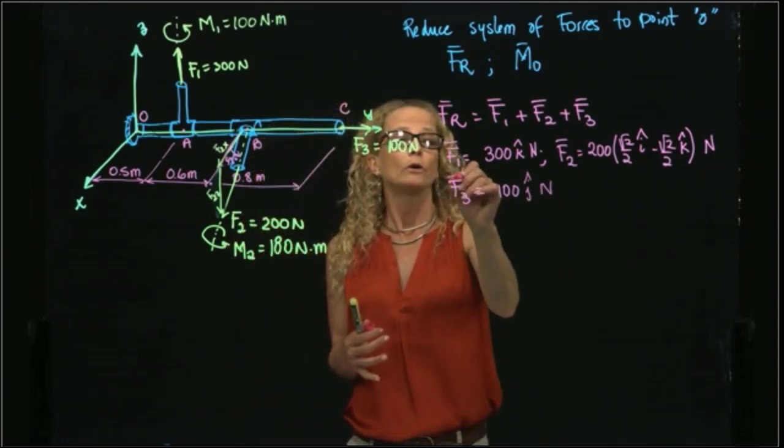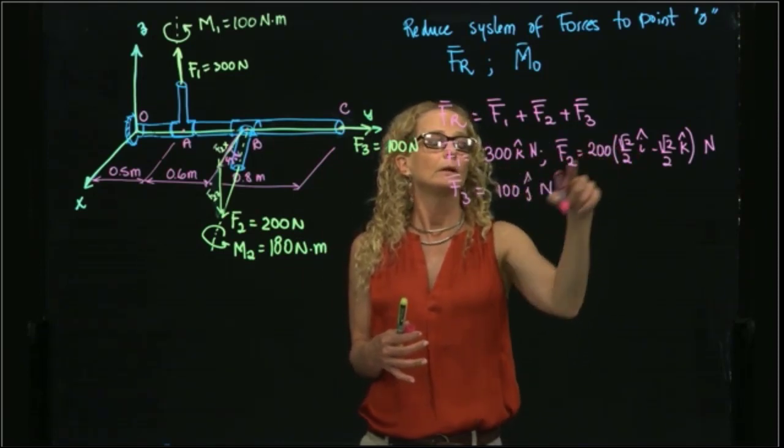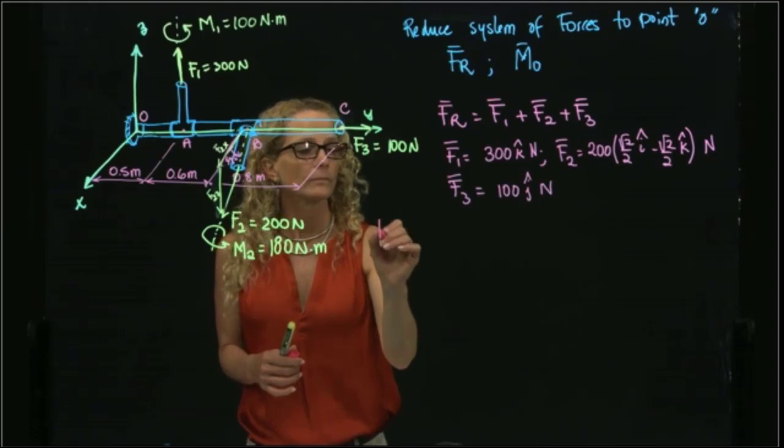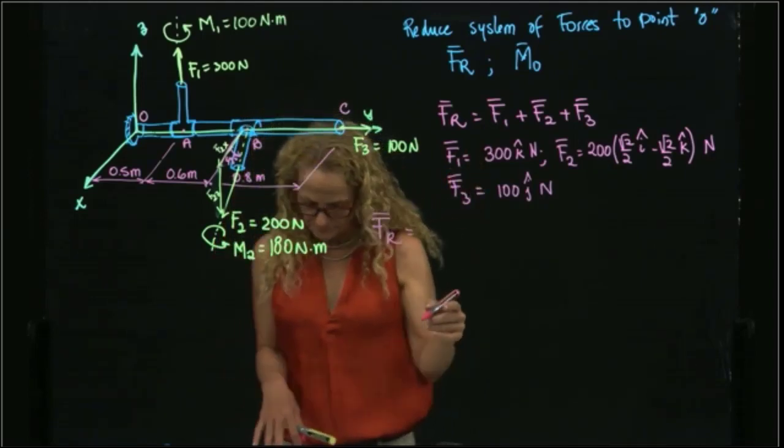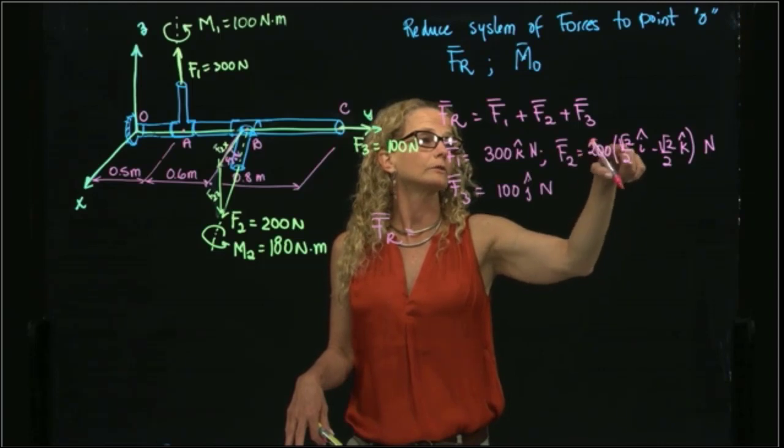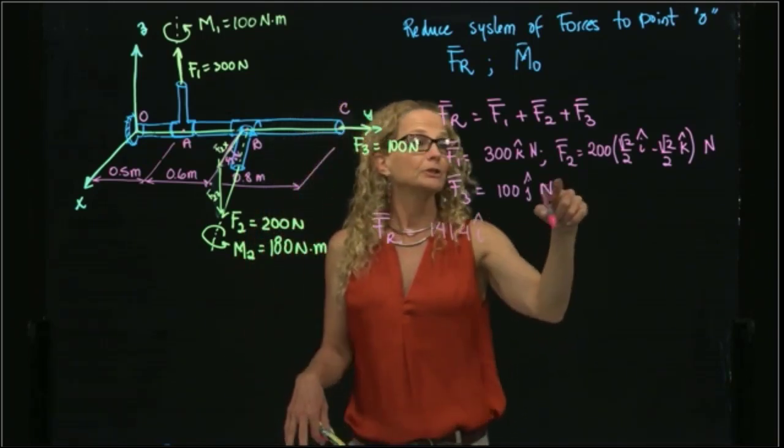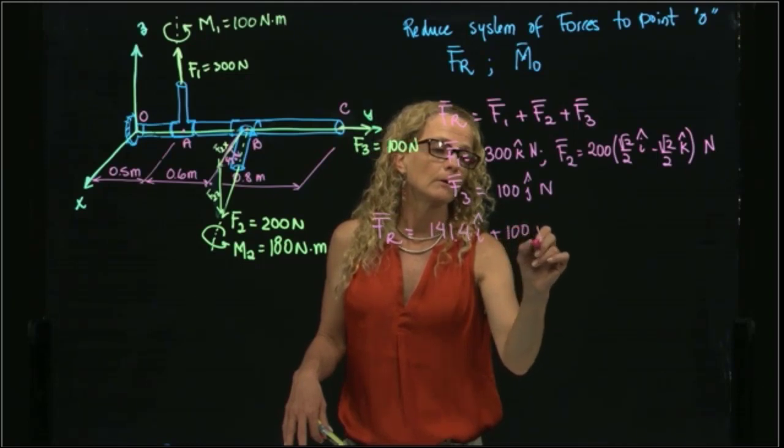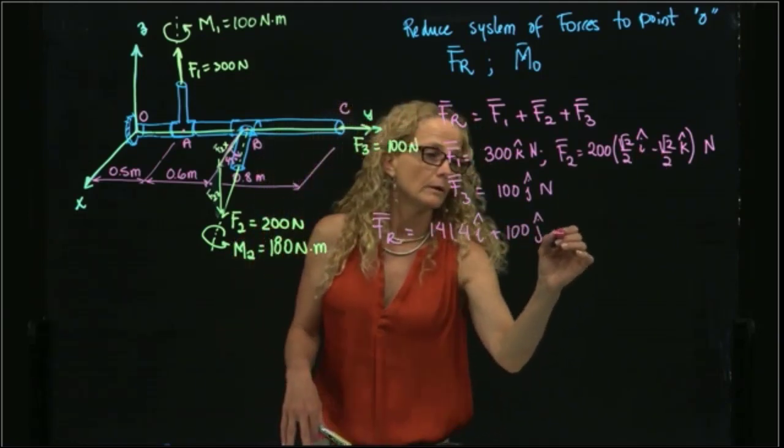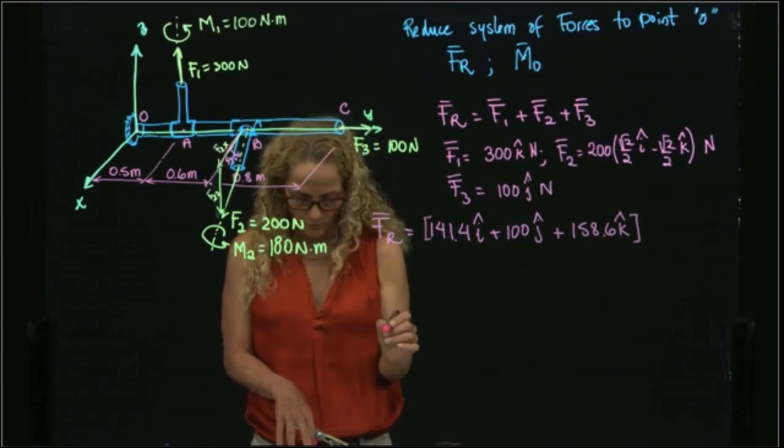Therefore, I will add all the components in i, all the components in j, and all the components in k. As you see, in i we only have this component. In j we have only this component. And in k we have this and this one. Therefore, the resultant force is equal to, in i, I have this one over here, which is 200 times square root of 2 over 2, so it's 100 square root of 2, so it's 141.4 in i. Then I have in j, I have only this one, 100 in j. And in k, I have to add 300 minus 141.4, which gives me 158.6 in k. And all that, the units of all that are in newtons.